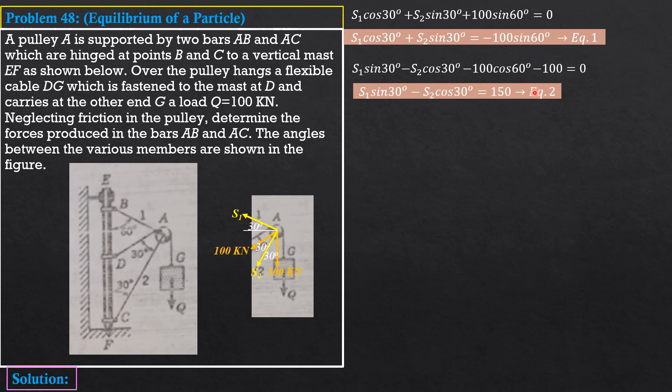Solving equations 1 and 2 simultaneously, we can now find S1, which is equal to 0 kilonewtons, and S2, which is equal to 173.2 kilonewtons, compression, in particular, because it is negative.